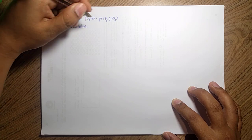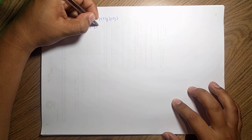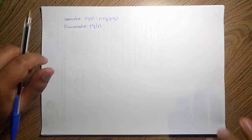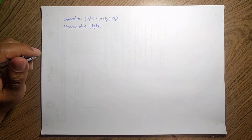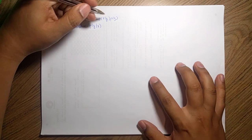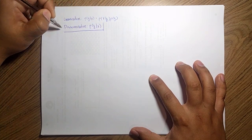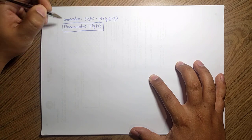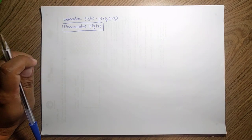Discriminative methods are simply a function from our input, so in that sense they are simpler. Today we will be focusing on how discriminative methods work and how we can use them.